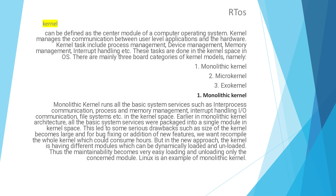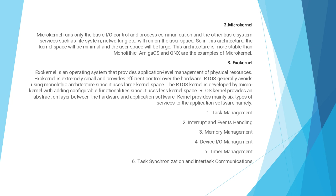In earlier monolithic architecture, all basic system services were packed into a single module in kernel space. This led to drawbacks such as a large kernel size, and bug fixing or adding new features required recompiling the whole kernel, which could consume hours. In the new approach, the kernel has different modules which can be dynamically loaded and unloaded, making maintainability very easy. Linux is an example of a monolithic kernel.